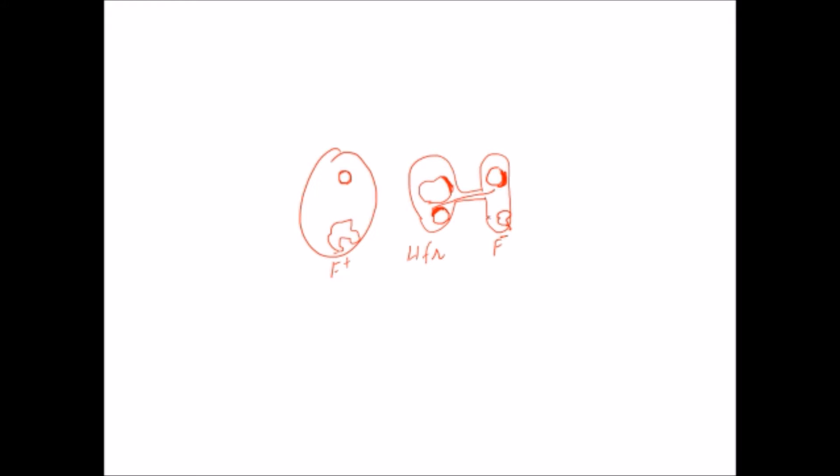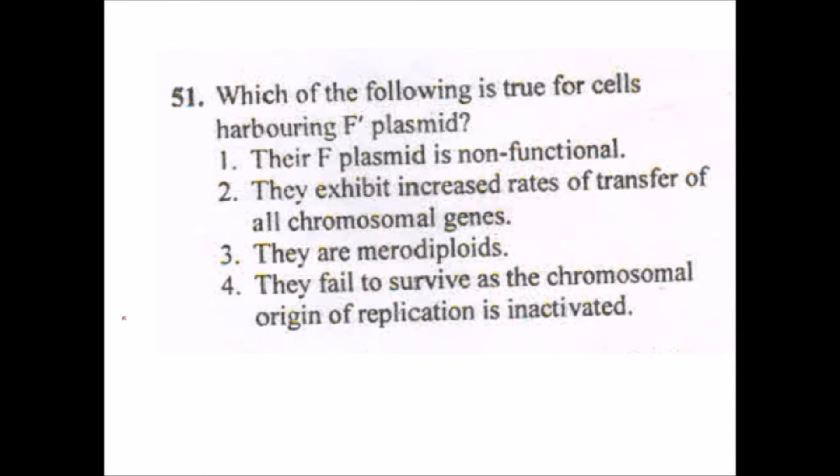Such bacteria which has this type of genetic material - F plasmid plus its own copy, a few parts of its own copy - is known as merodiploid. So the answer will be merodiploid. I'm sorry I'm actually suffering from cold, so because of this reason I delayed in recording.